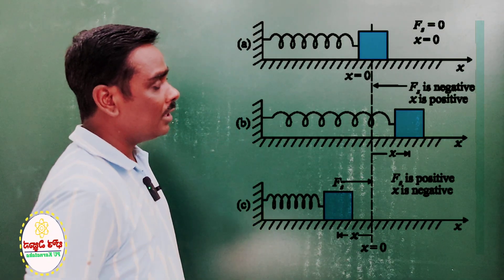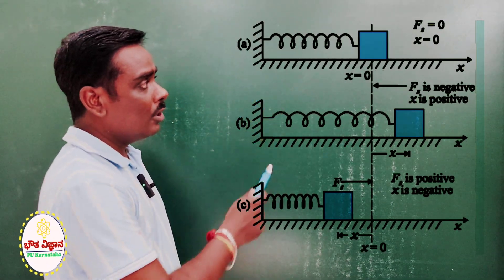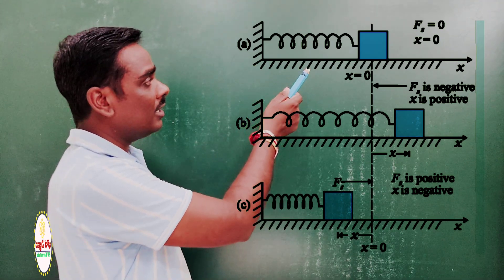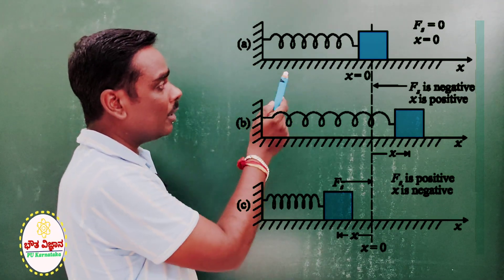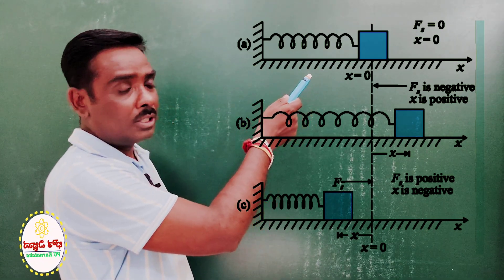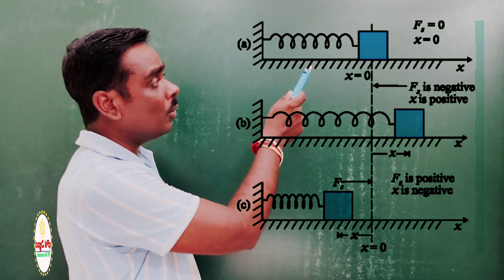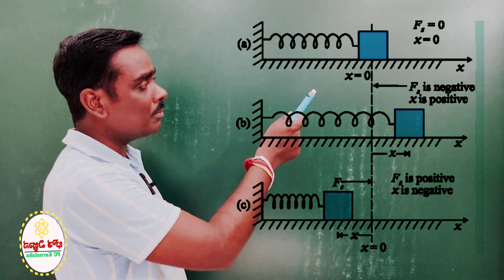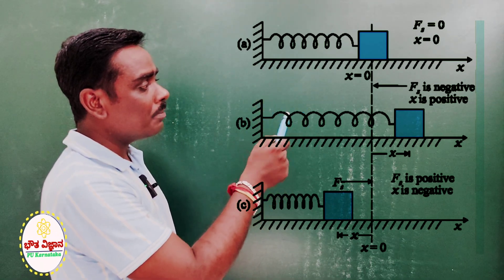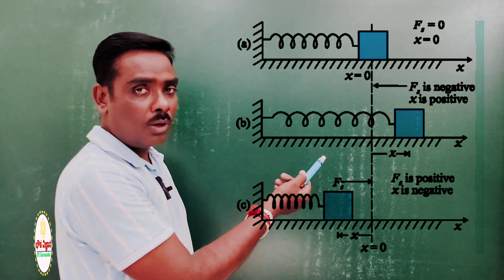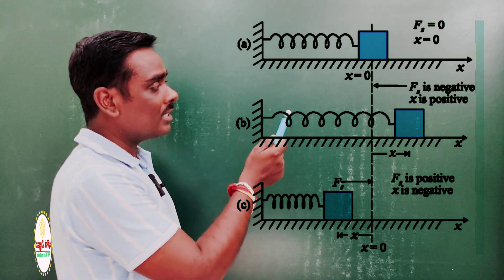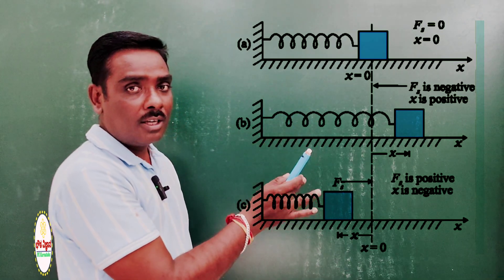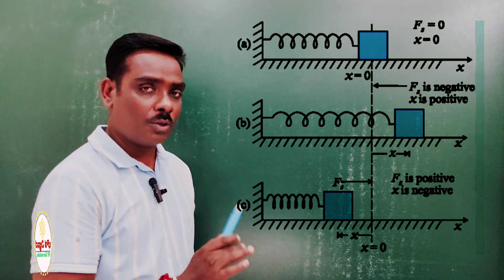Now we look at this diagram — the spring has three positions. First, the equilibrium position: spring at x = 0, where no energy is stored. Second and third cases: spring is compressed and spring is extended. So, how much energy is stored? That is the question.